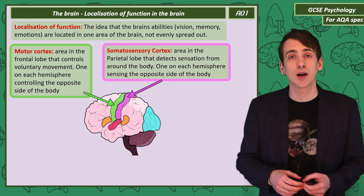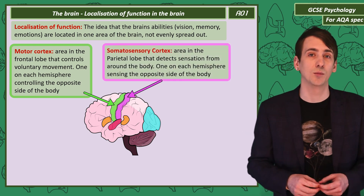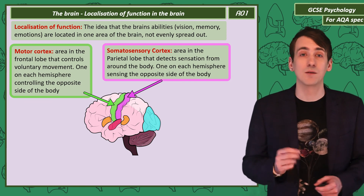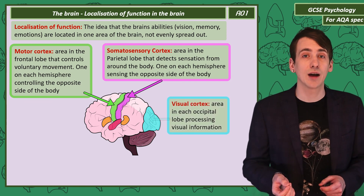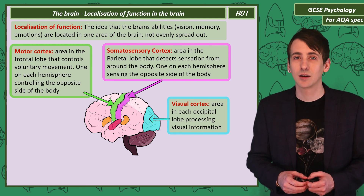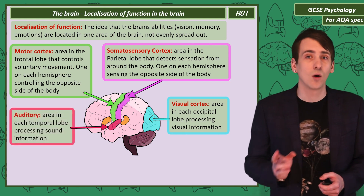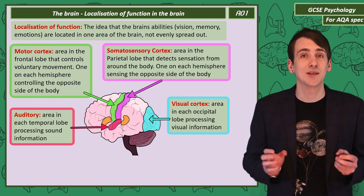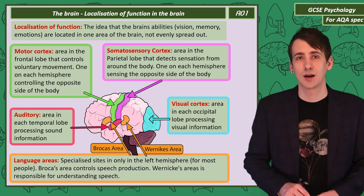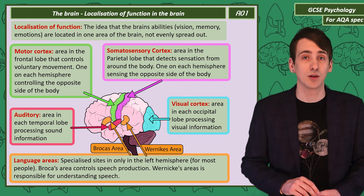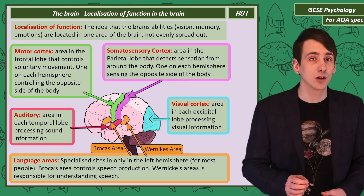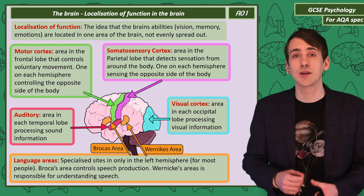The somatosensory cortex runs along each of the parietal lobes and detects touch sensation from the opposite side of the body. The visual cortex — one in each occipital lobe — processes visual information. The auditory cortex, one in each temporal lobe, processes sound information. There are also specialist language areas, found only in the left hemisphere: Broca's area controls speech production, and Wernicke's area is for understanding speech.